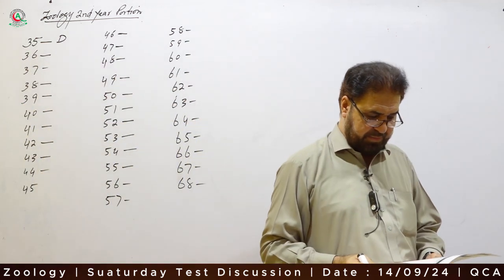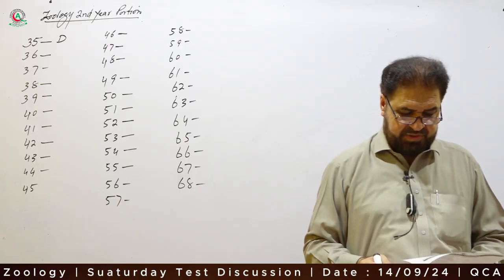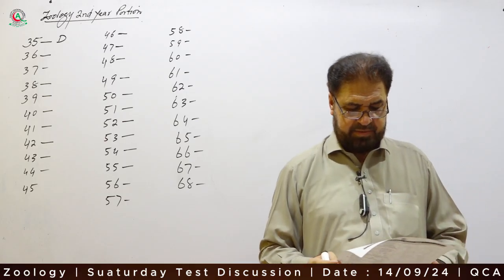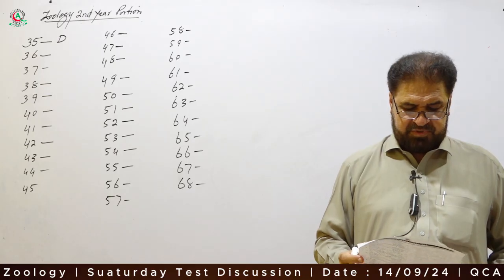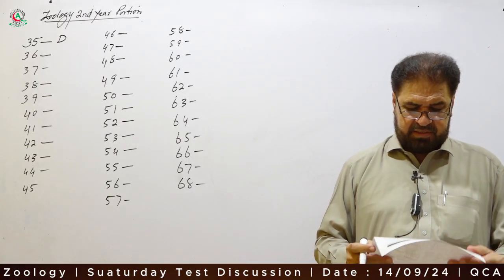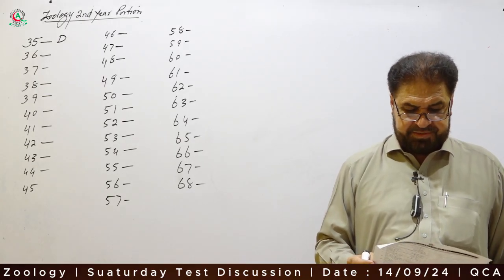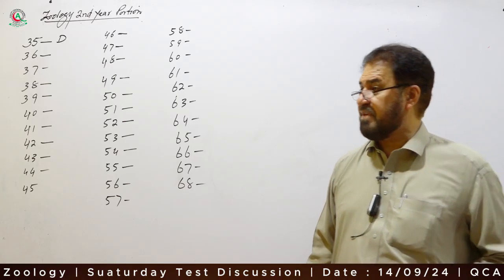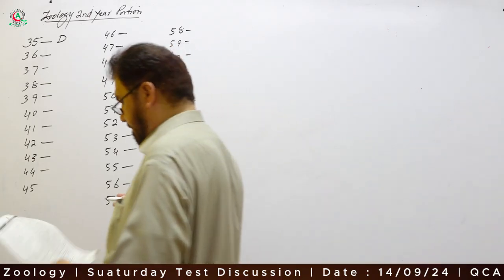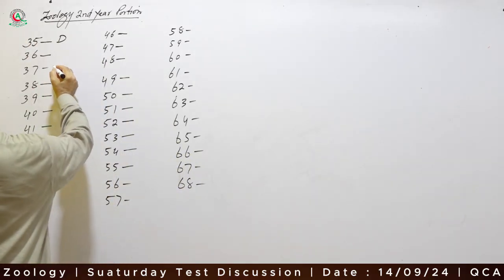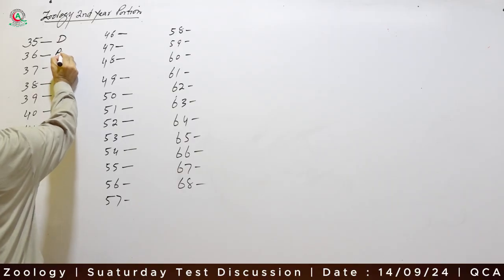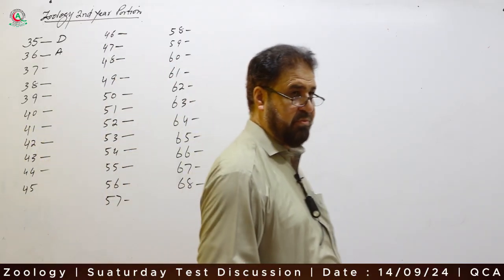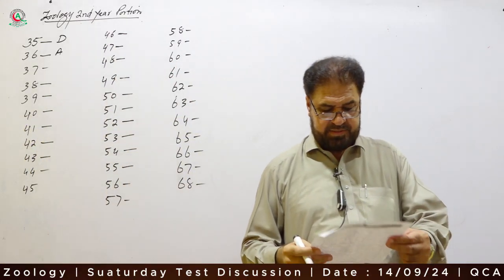Question 36: The part of respiratory system visible externally — Option 1: nose, Option 2: pharynx, Option 3: larynx, Option 4: trachea. Option A, nose, is the correct answer. Nose is the only visible part of the respiratory system.